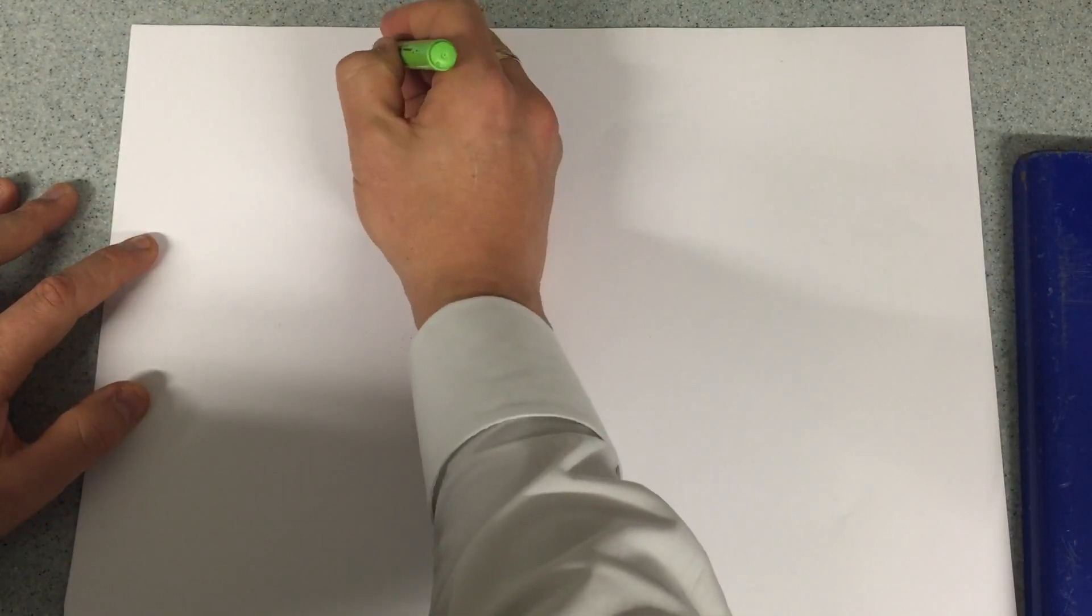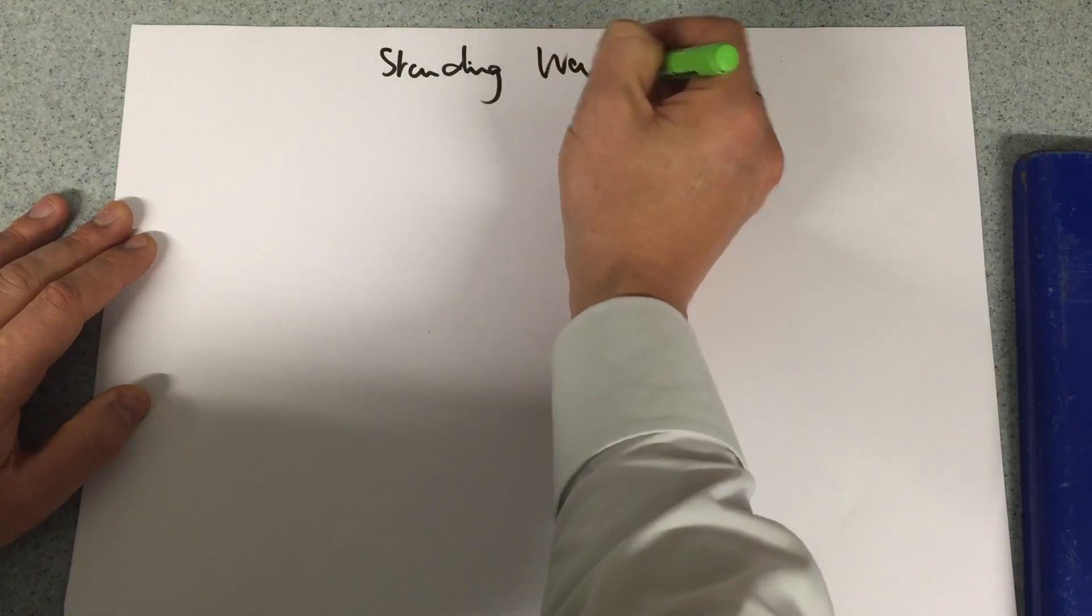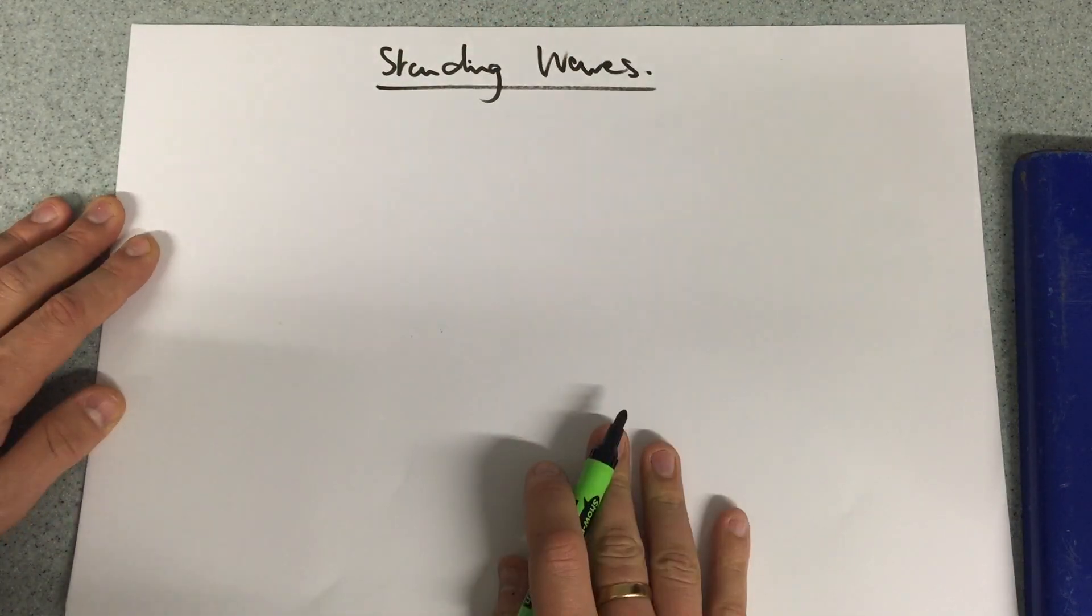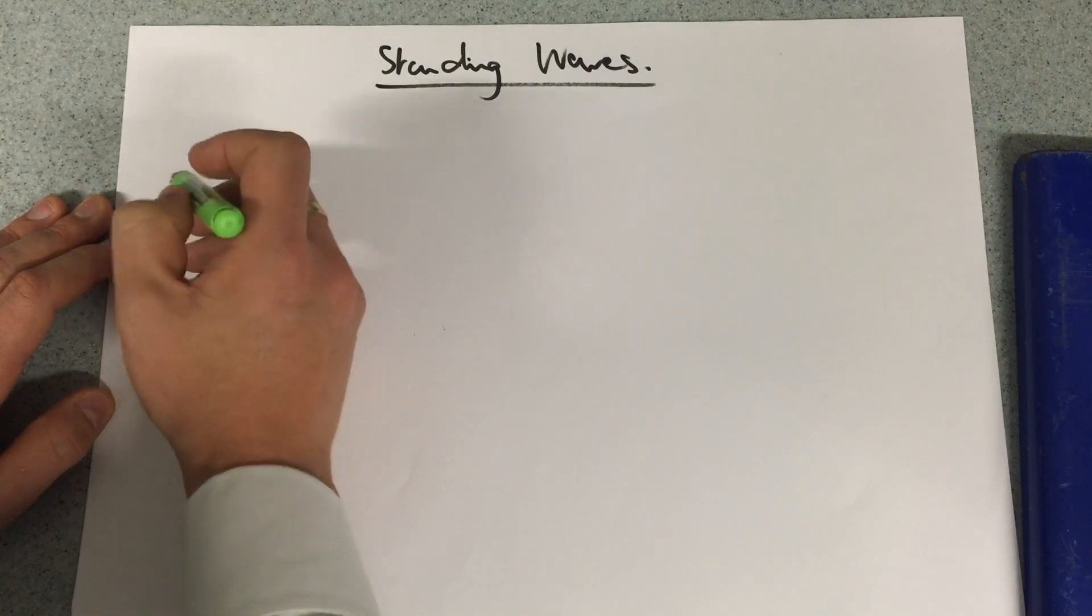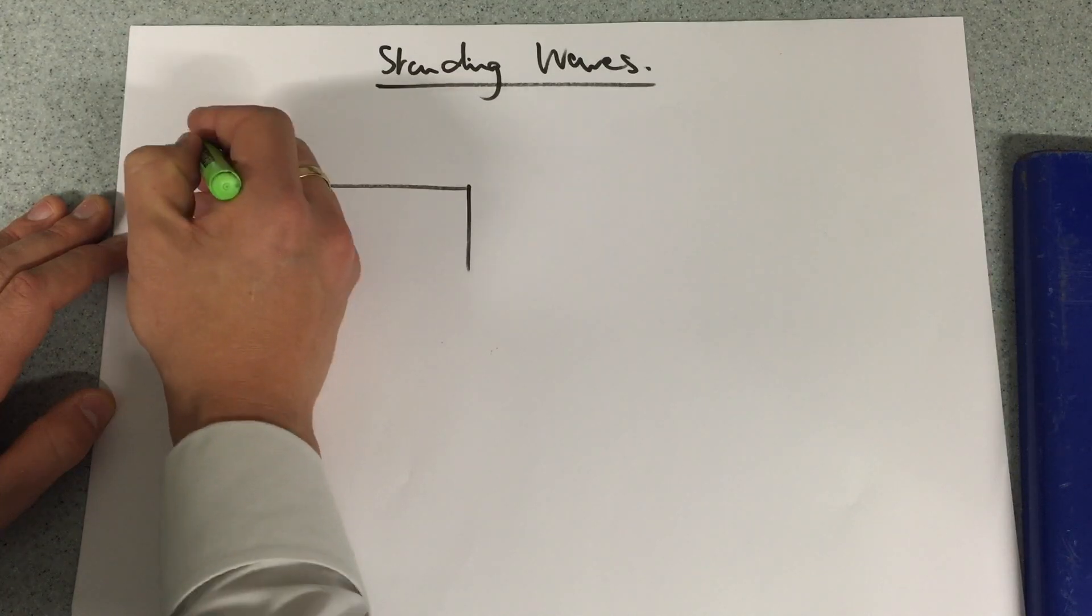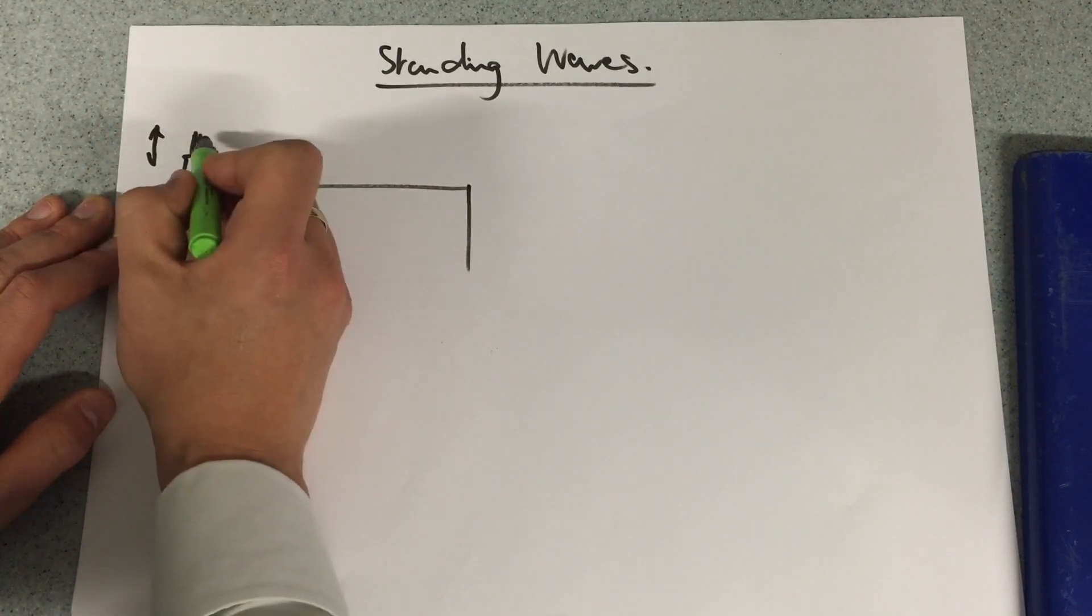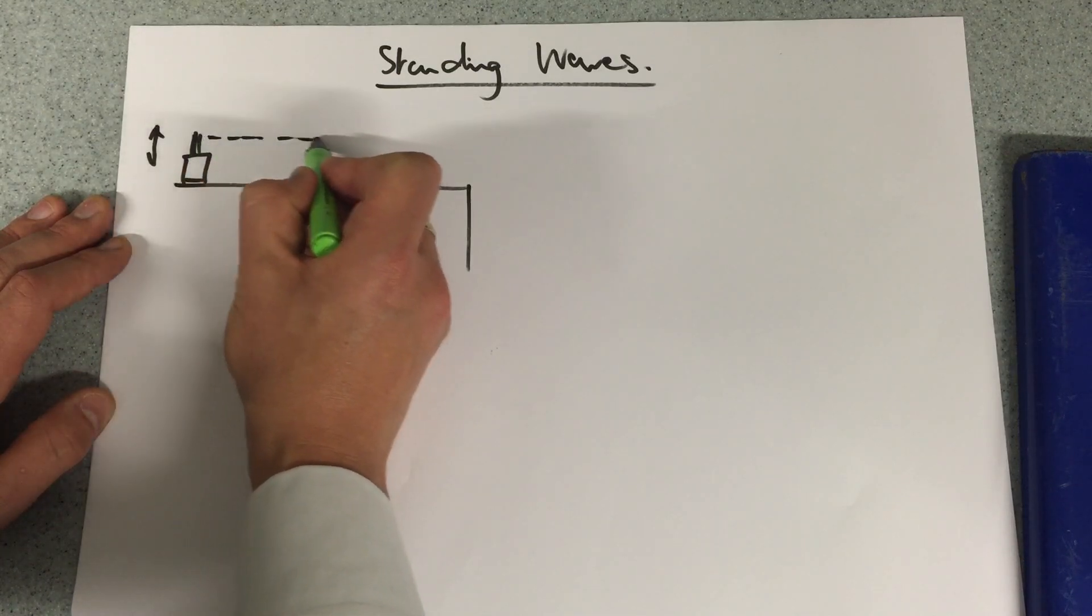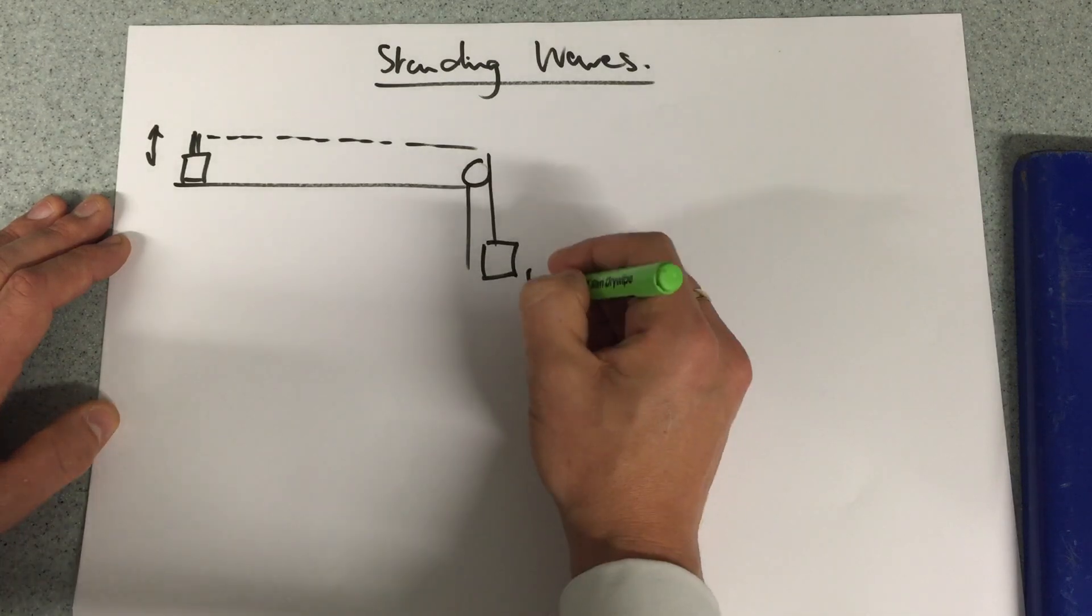Here's a practical lesson looking at standing waves on a string. We're going to have a frequency generator that's going to cause a vibration at this end. It's then going to be attached to a piece of string that goes over a roller and then attached to a weight.